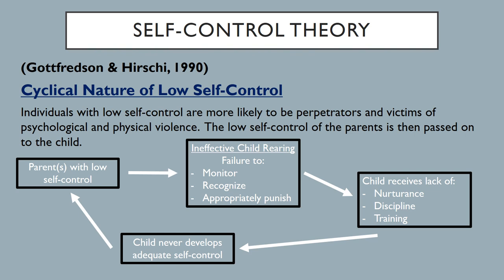Without nurturance, the child lacks safety and trust and doesn't know who to turn to in need. Without discipline, the child thinks they can do whatever they want. Without training and guidance, they miss the developmental lessons — like sharing, not taking others' belongings, asking for forgiveness — that build self-control. The child never develops adequate self-control, continues growing, and ultimately becomes another adult or future parent with low self-control, and the cycle starts all over again.